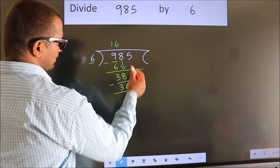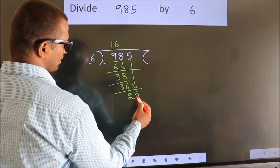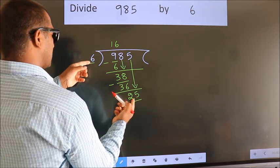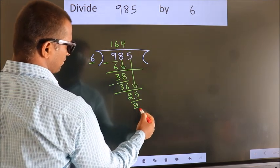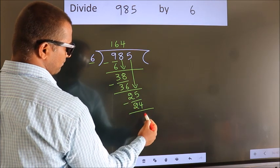After this, bring down the beside number. So 5 down, so 25. A number close to 25 in the 6 table is 6 fours, 24. Now we subtract. We get 1.